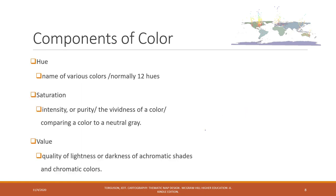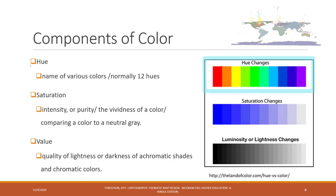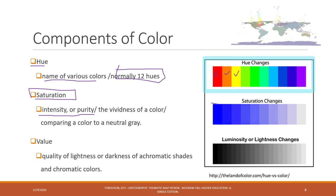When we talk about the components of colors, there are three. The first is hue — basically the name of a color, such as red, orange, yellow, green, purple, blue. Normally there are 12 different hues. Saturation means the intensity or purity of the color — how it compares to a neutral gray. If you add more gray, the intensity and purity will be lower.